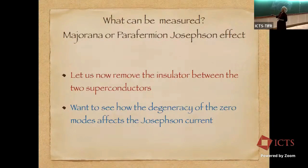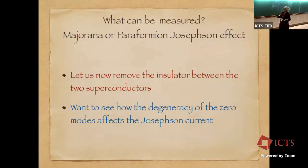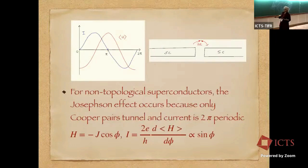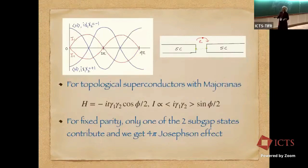This is correctly done using bosonization where you can see the zero mode is bound at a domain wall between the region gapped by pairing and gapped by an insulator. When we take these deltas and m's to infinity, make them very large, these factors of the cosines get pinned to their minima. What can be measured is the parafermion Josephson effect. To do that, we remove the insulator between the two superconductors and want to see how the degeneracy of the zero modes affects the Josephson current. Just to remind you, the standard Josephson effect for normal superconductors, you know that Cooper pairs are jumping across the superconductor, giving rise to an hc by 2e effect. The energy is proportional to the cosine of the phase difference between the two superconductors. The current is proportional to the derivative of the energy, hence proportional to sine phi, periodic in 2π.